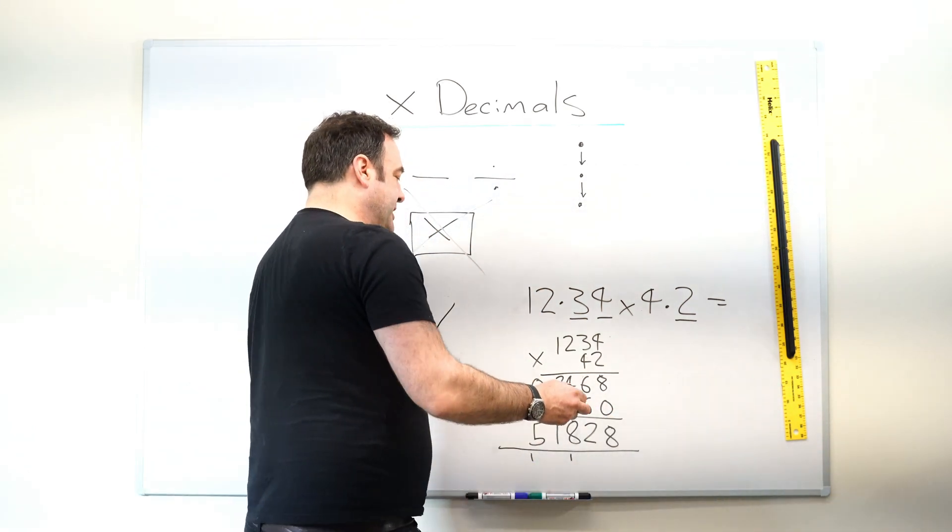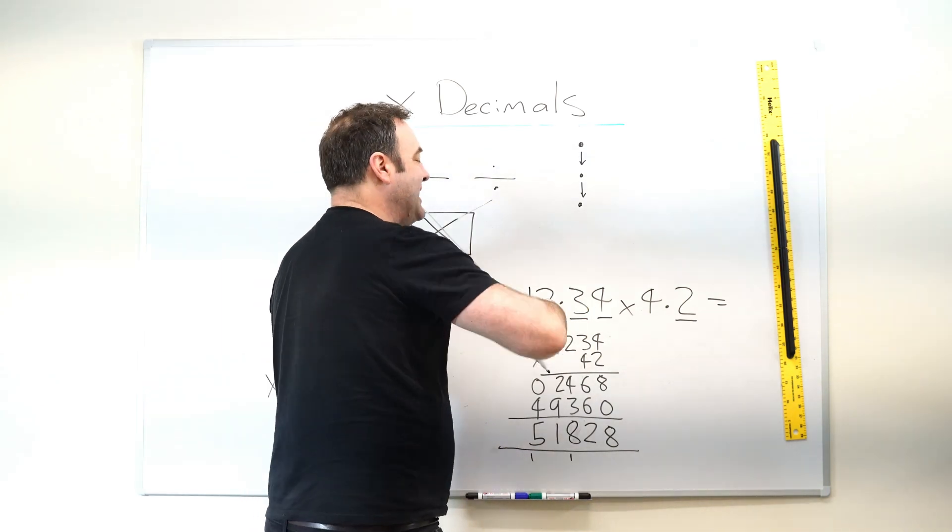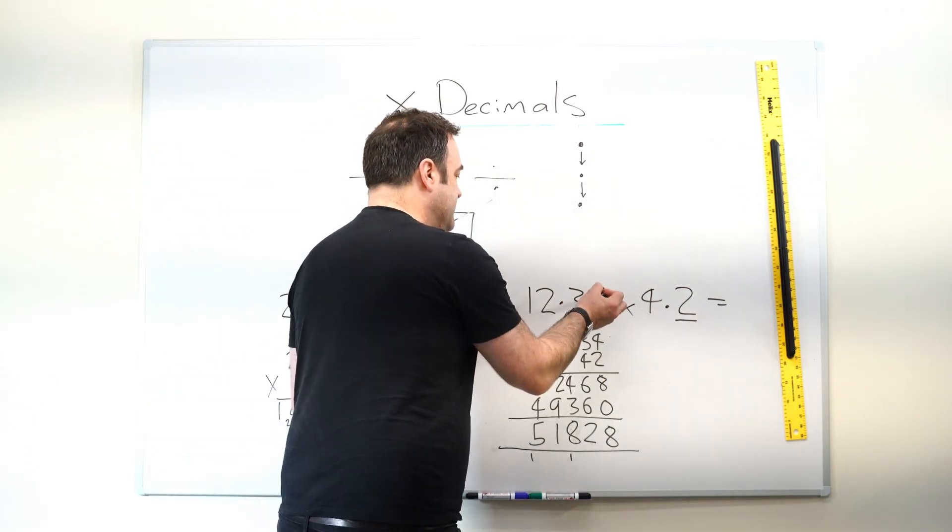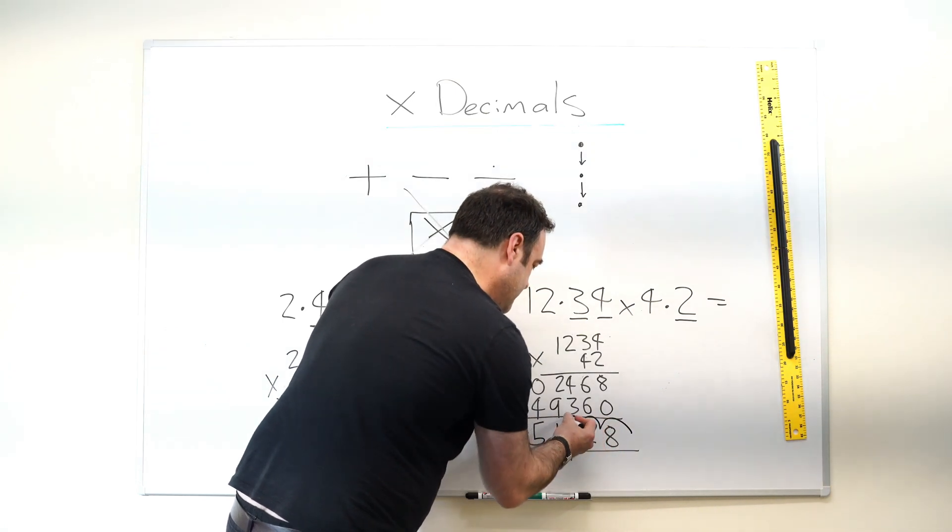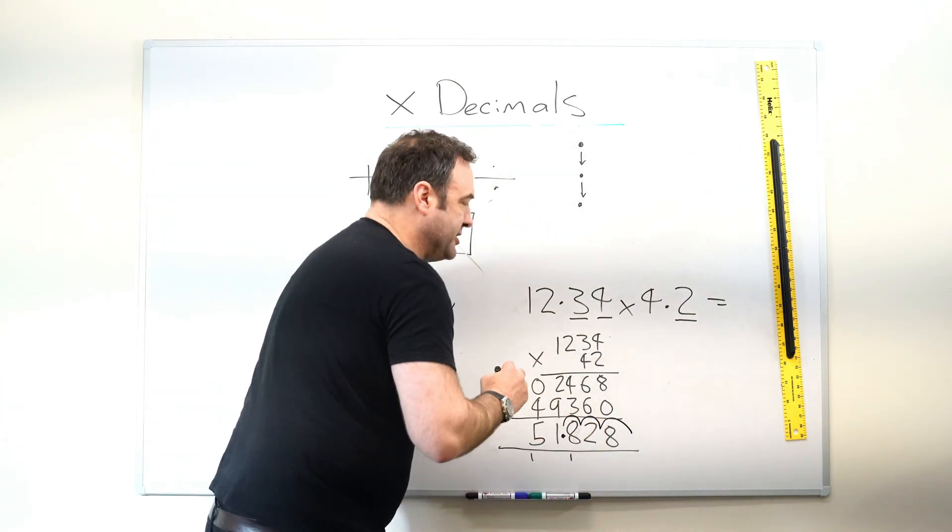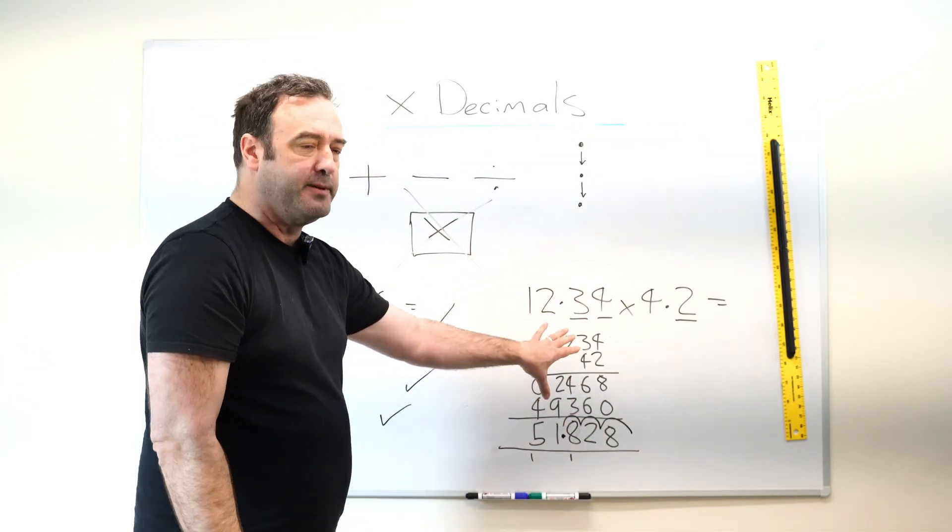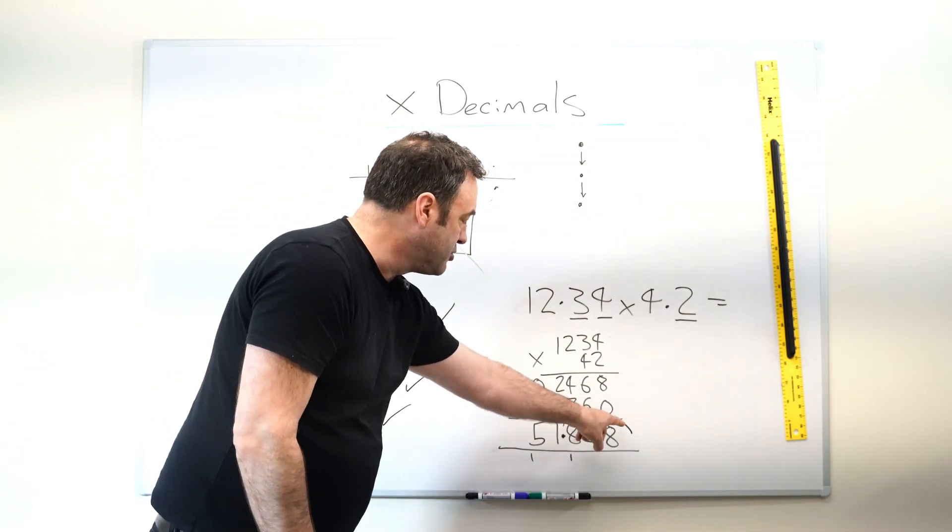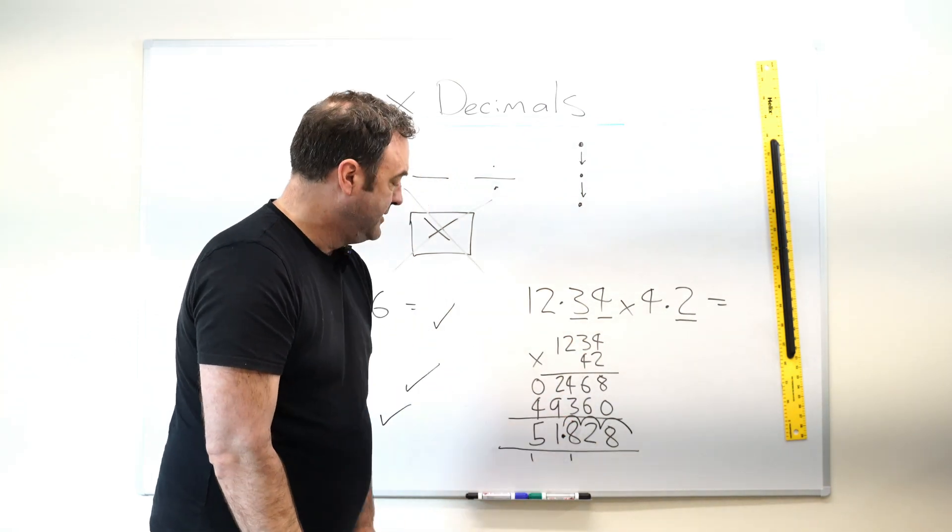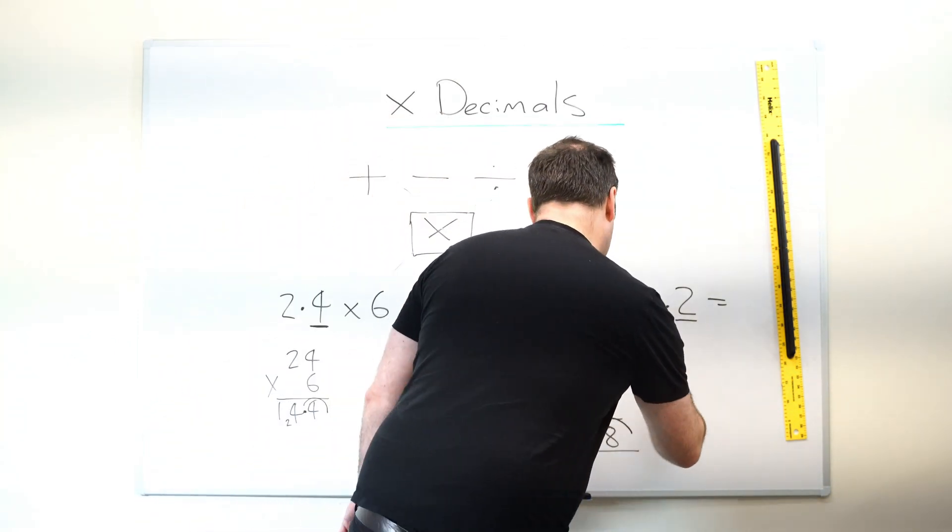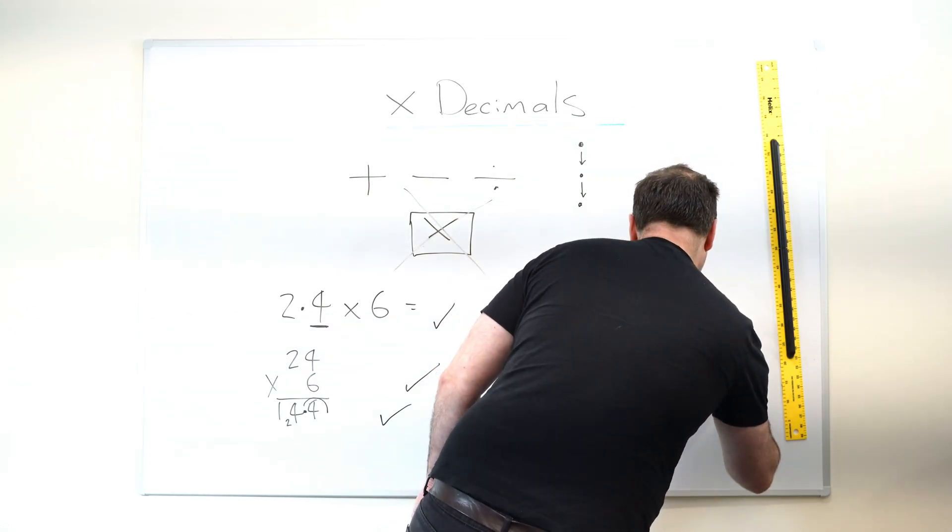Then at the end, the magic happens. We bounce it back in at the end by the number of decimal places in the whole question. So 1, 2, 3. Now I get students when they're starting out to do all of this. So I say you must do it the way I'm doing it here. Even drawing the jumps in. Do not exclude any part of this journey here. So this one would be 51.828.